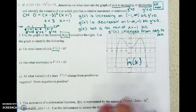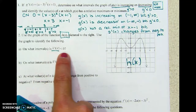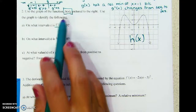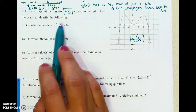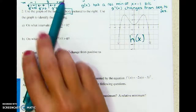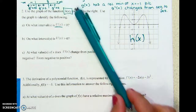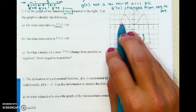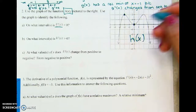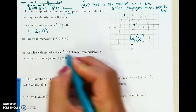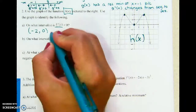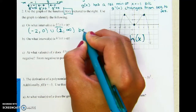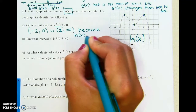On what intervals is the derivative less than zero? The derivative is less than zero when h is decreasing. The slope of the tangent line needs to be negative, which means the graph is decreasing. Looking at the graph: h is decreasing from negative two to zero, and then from two to infinity.